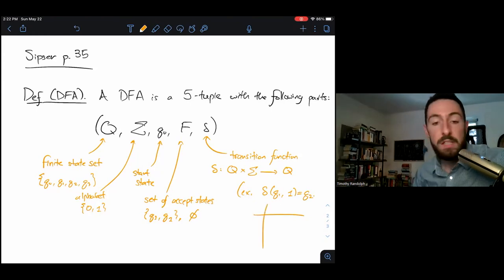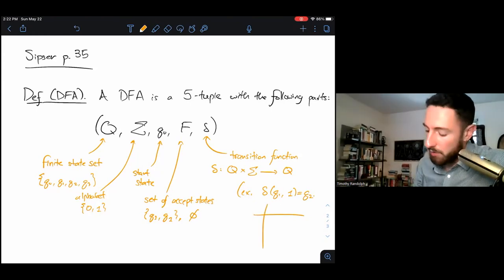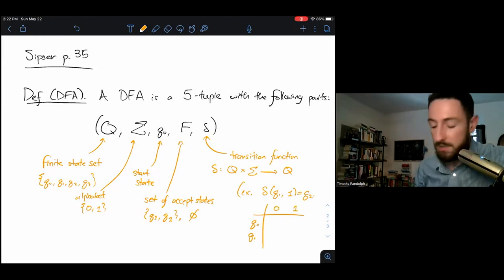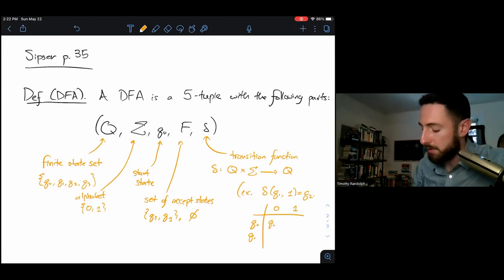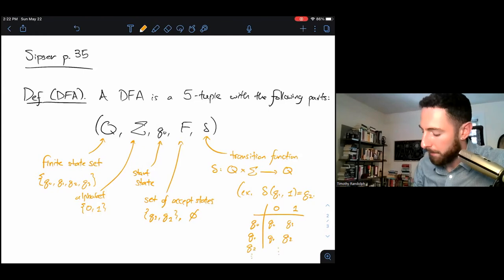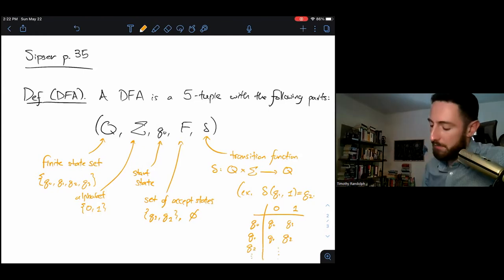Really, any representation that fully defines this function is fine. So if we prefer, we could fully define this function using a table and say, if you're in Q0 and you see a 0, go to state Q0. Stay where you are. If you're in state Q1 and you see a 1, go to state Q2. Just fill in this table with other states and other outputs for my function.